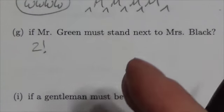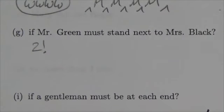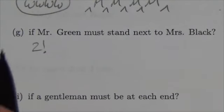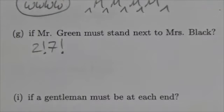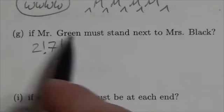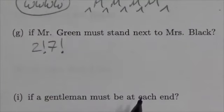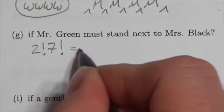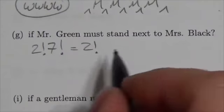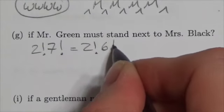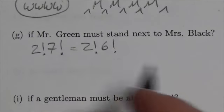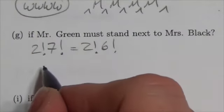Now treating them as one group, there are six other people. If you treat them as one group, think of that as a single entity with six others. There's therefore going to be two factorial times seven factorial ways of permuting all of those groups. Or you can think of it as two factorial for those two standing next to each other, multiply that by six factorial because there's six other people.